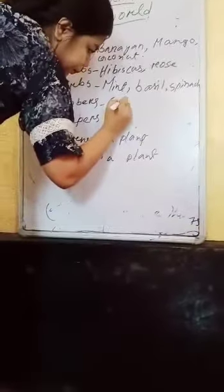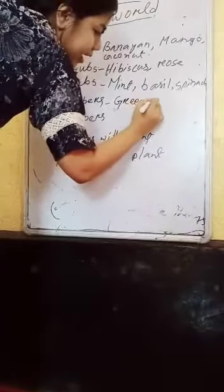Next is climbers. Some plants have very weak stems and cannot grow upright on their own. They climb with the support of a stick, a wall, or some other plant. Examples of climbers are green pea, money plant, and grapevine.